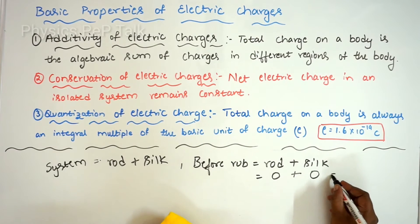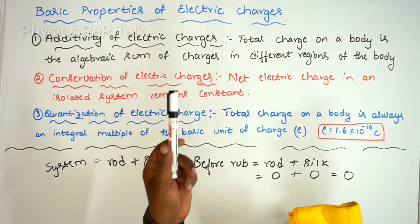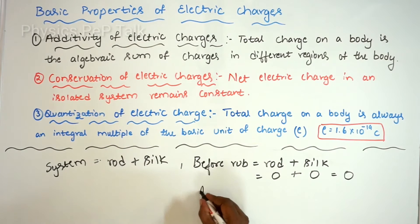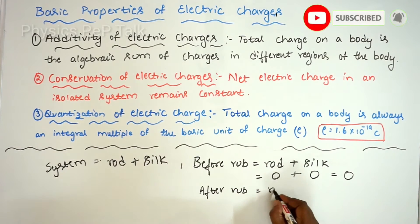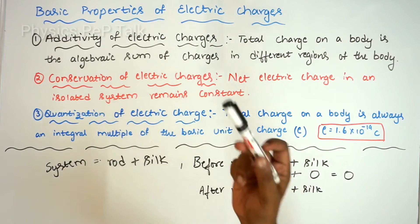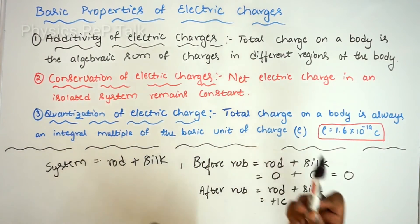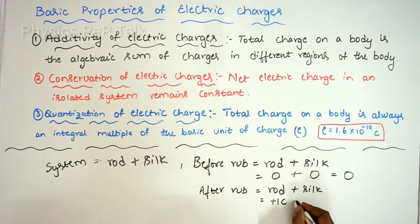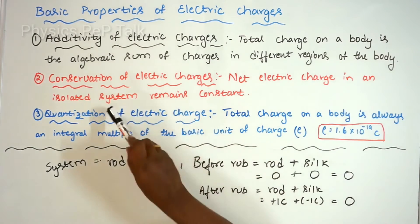After rubbing, the glass rod attains a positive charge and the silk cloth attains a negative charge. If the glass rod attains plus one coulomb, then the silk cloth attains minus one coulomb equivalently. So the total charge after rubbing is plus one plus minus one, which is again zero. This is what the statement says: the net electric charge in an isolated system remains constant. Before rubbing the total charge was zero; after rubbing the total charge is still zero.